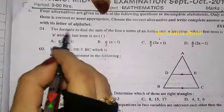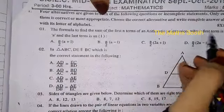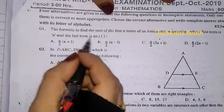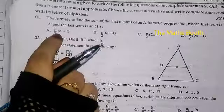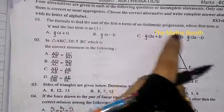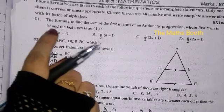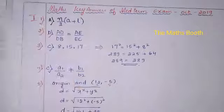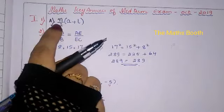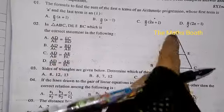Question number one: the formula to find the sum of the first n terms of an AP whose first term is A and the last term is L. We know that when the first term is A and the last term is L, the formula is n/2 times (A + L). So n/2(A + L) is the correct option.